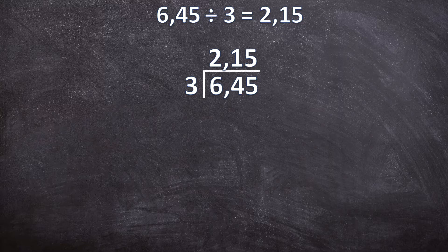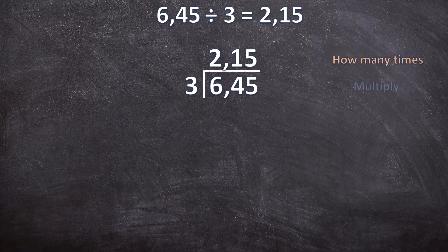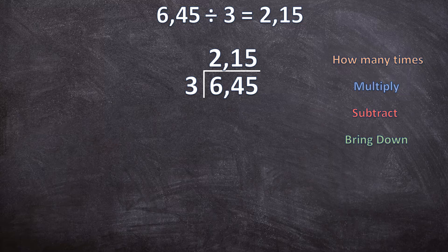If you're not sure exactly how long division works, I suggest you go and watch one of those videos explaining long division in depth — I will link them in the cards above and in the description box below. In this video I'm going to concentrate on the extra steps we need when dividing a decimal number by a whole number. Just to quickly refresh your memory, the four steps in long division are: how many times, multiply, subtract, and bring down. We always start at the left and work our way to the right.